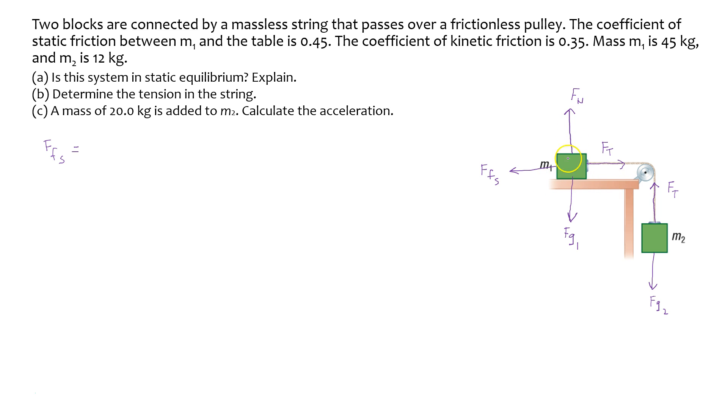And in this case, since this block is on a flat surface, the force of, the normal force is equal to the force of gravity. And so to find the force of friction, the static force of friction, it's the coefficient of static friction multiplied by the gravity that the block is experiencing. And recall, to find the force of gravity, you take the mass of the object and multiply it by G. And so G is the acceleration due to gravity, which is 9.8. So mu s times M1 times G.